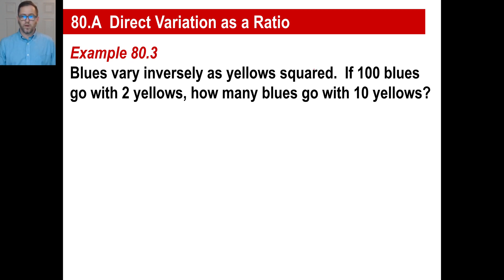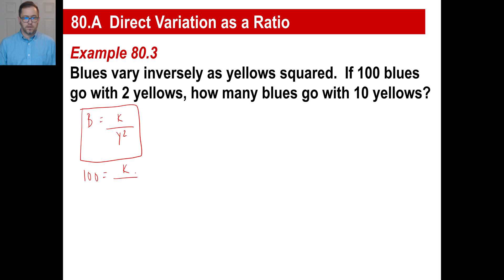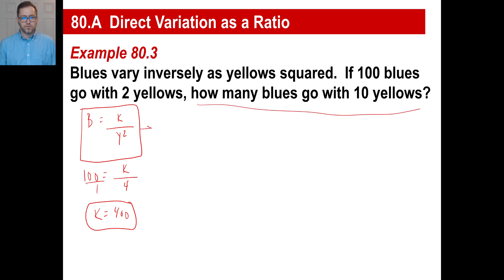Blues vary inversely as yellows squared. Old way: b = k over y squared. If 100 blues go with 2 yellows, then 100 = k over 2 squared, so 100 = k over 4, meaning k = 400. They ask: how many blues go with 10 yellows? Using the equation: b = 400 over 10 squared, which is 400 over 100, so b equals 4.